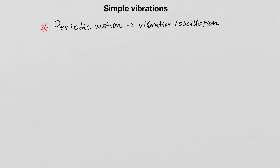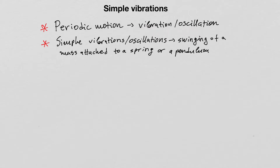To understand the concept of vibrations, we are going to discuss only simple vibrations or oscillations. Any periodic motion in general can be classified as vibration or oscillation, but we will focus on simple examples — specifically, the swing of a mass attached to a spring or a pendulum.